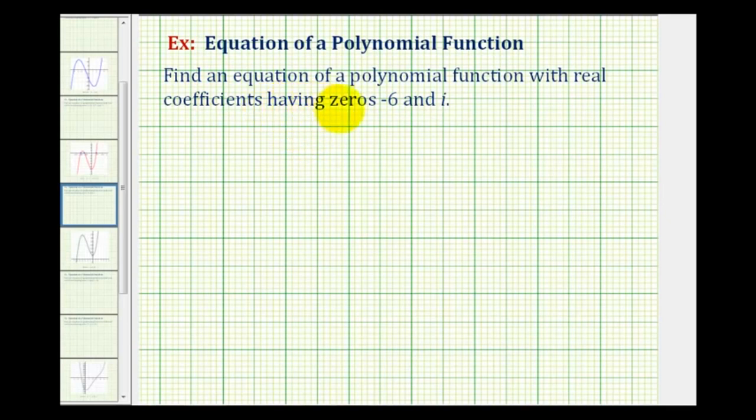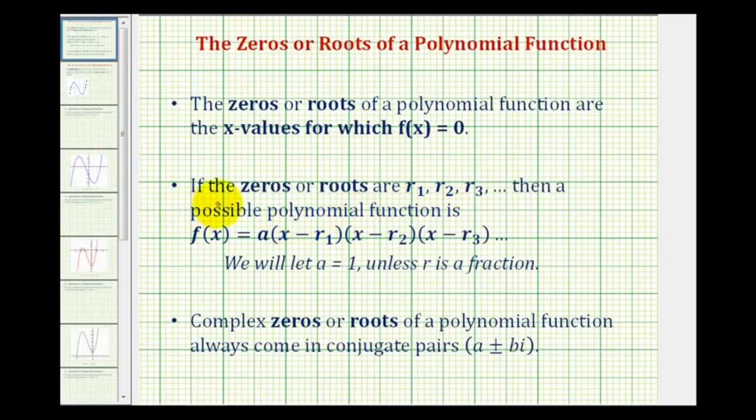First, if we have these zeros of a polynomial function, it gives us information about the factors of the function. And also if we have complex zeros, complex zeros always come in conjugate pairs. So what I mean by that is if the zeros or roots are r₁, r₂, and so on, then our polynomial function must contain a factor of x minus r₁, x minus r₂, and so on.